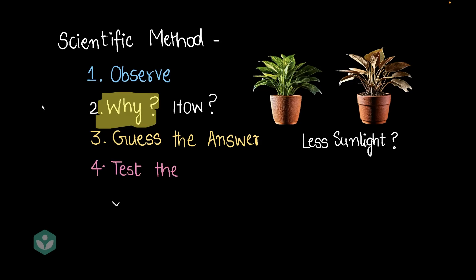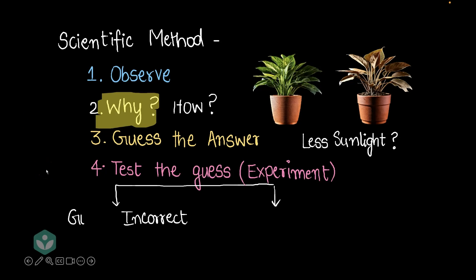So, what he did was he began to test this guess using an experiment. And now, in this particular case, we know what the outcome was because we just saw it. But when you test any guess, when you test any guess using an experiment, you can end up with either an incorrect guess or a correct guess. What happens if your guess is incorrect? If your guess turns out to be incorrect, you need to go back and guess again.